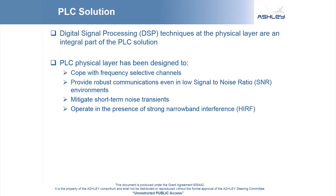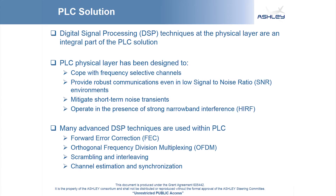It provides robust communications even when the power of the received signal level is not much more than the noise power, and mitigates short-term noise transients that may occur. It can operate even when very strong narrowband interfering signals may be present, such as is the case with HERF. Enabling this are several advanced DSP techniques such as forward error correction, in which redundant bits are added at the transmitter in the form of coding in order to help detect and correct errors at the receiver.